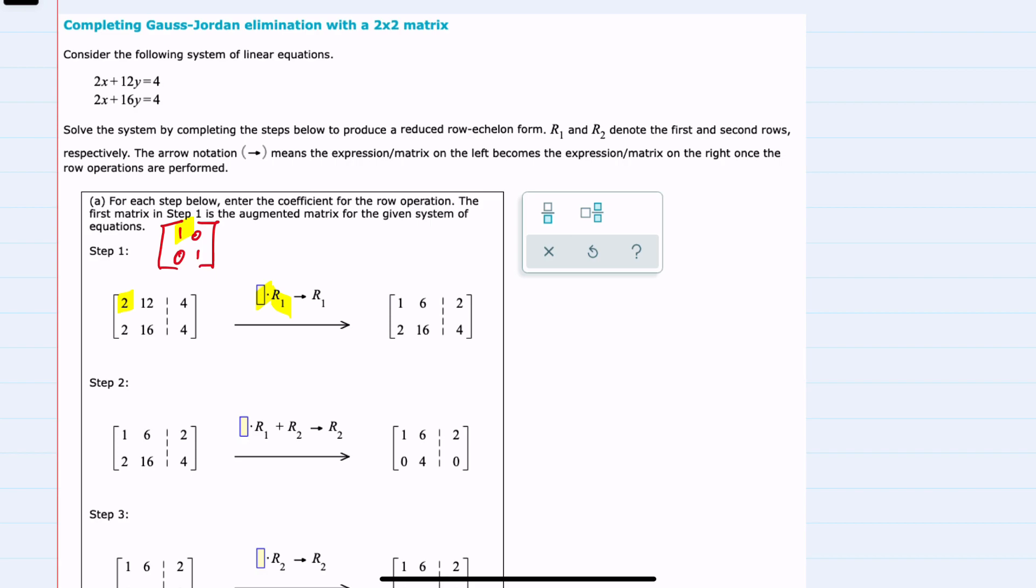I can multiply everything in there by one half. So this would give me one half of two, which is one, one half of twelve, which is six, and one half of four, which is two. So first step, multiply everything in row one by one half, and that now gives me the one that I wanted in that upper left-hand corner.